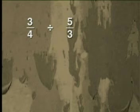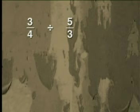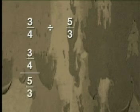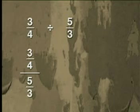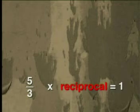What is 3 divided by 4, divided by 5 divided by 3? Let us write it as a fraction divided by a fraction. As a first step, let's focus on the denominator, 5 divided by 3. Now, I'm going to create a 1 in the denominator, and to get this, I have to multiply the denominator by the reciprocal of 5 divided by 3.